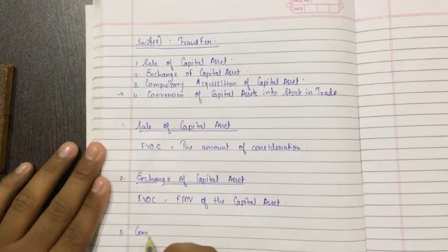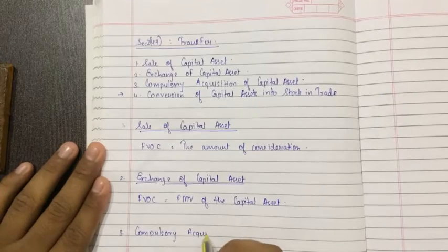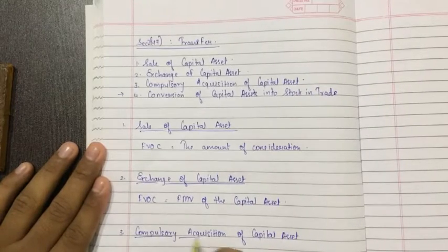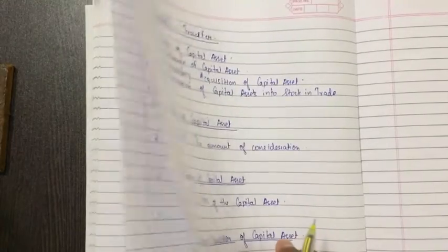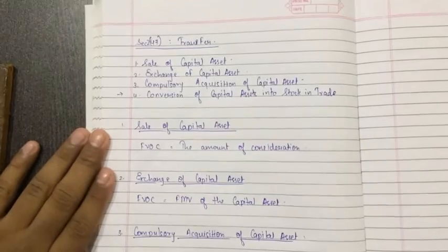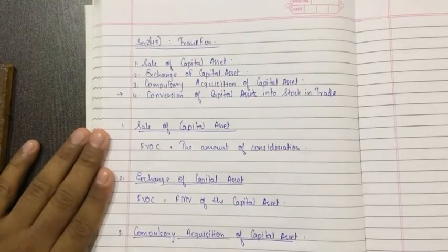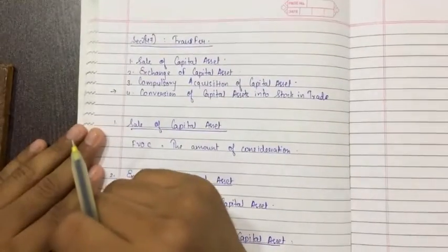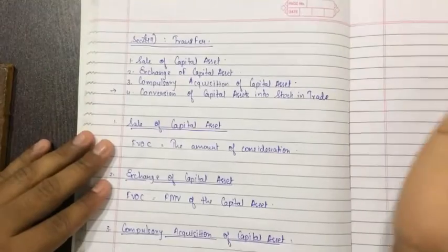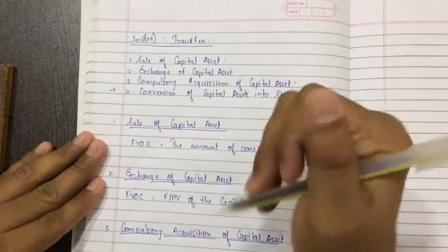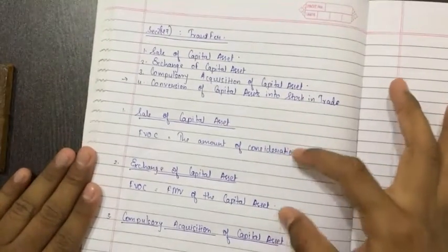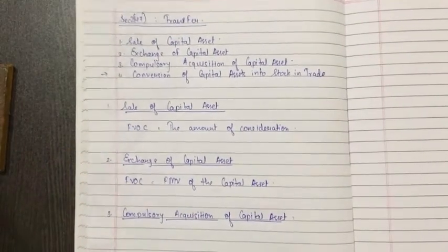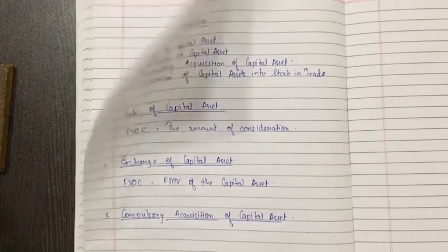Third, compulsory acquisition of capital asset. What is compulsory acquisition of capital asset? Many times government of India takes a particular land and requisites compulsorily. They say they want to make a road over there and they requisite the land or property and provide some compensation. So how to calculate capital gain on it? First you write this much. This part will be taught in the next video. Please pause the video and write it down.